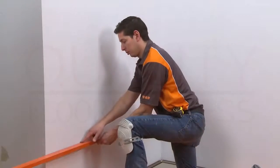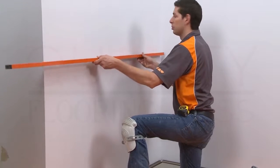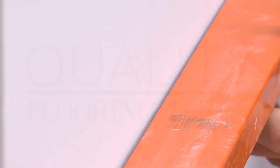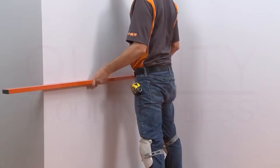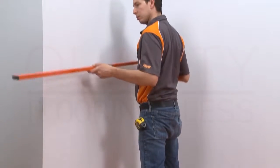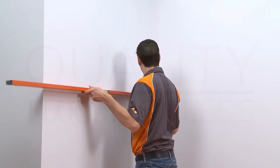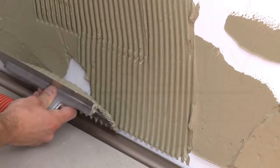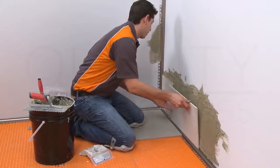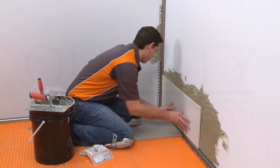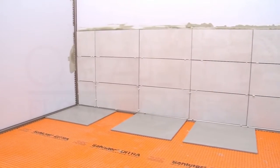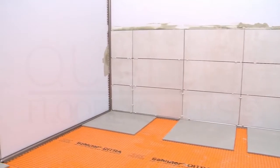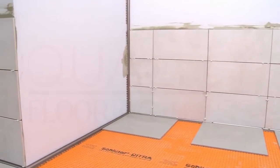We check the walls with a straight edge to see if they are flat or will require any correction before installation begins. This is an important consideration in any application, but especially when profiles will be used as shown here. The Dialex AHK profiles and some of the wall tiles have already been installed. Now we are ready to demonstrate the Quadec profile installation, beginning at the outside wall corner.